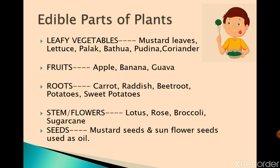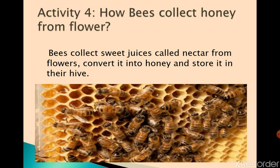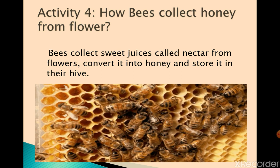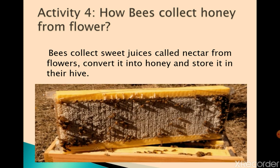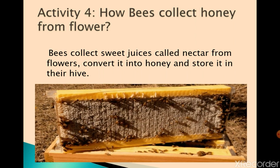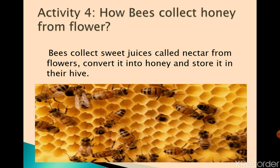Seeds are also a most important edible part of the plant used in our food, such as mustard seeds and sunflower seeds which are used to make oil. Can you see this picture? These are bees. Bees collect sweet juice called nectar from flowers, convert it into honey, and store it in their hive.